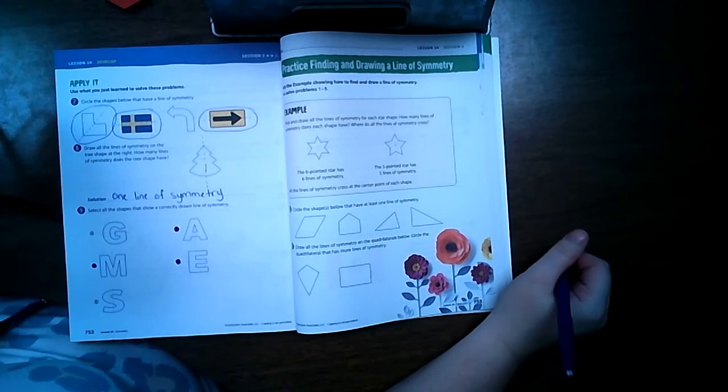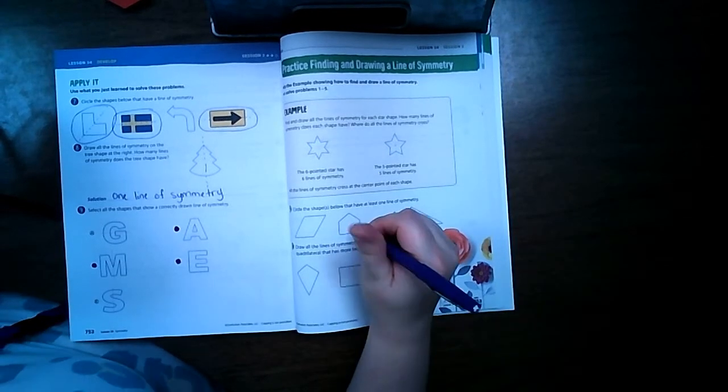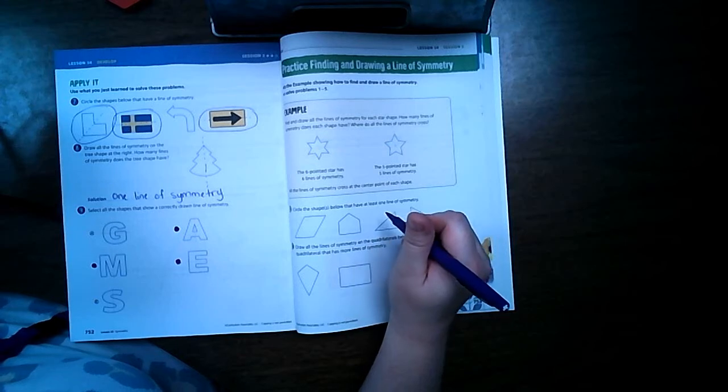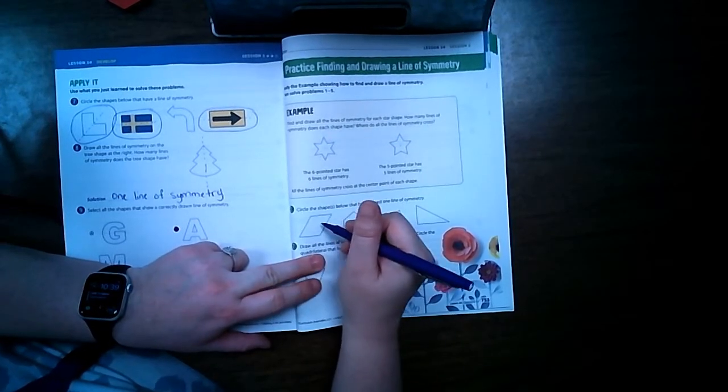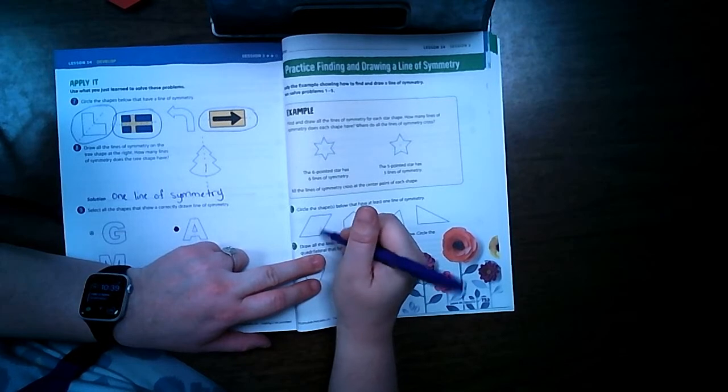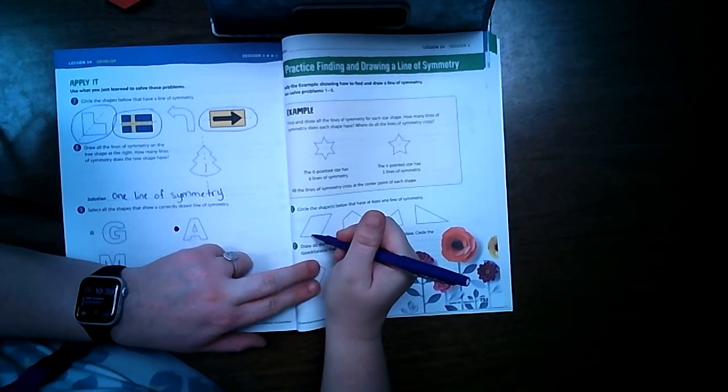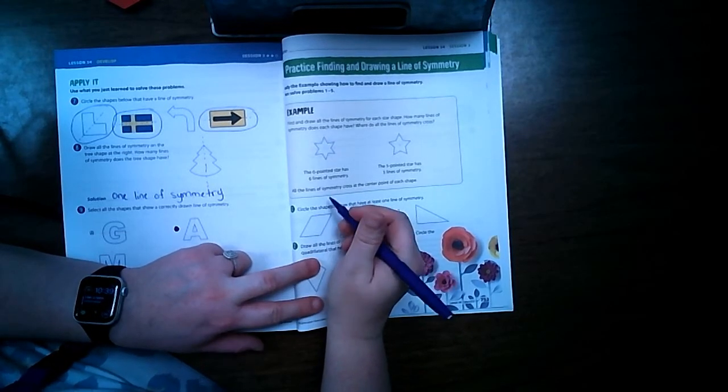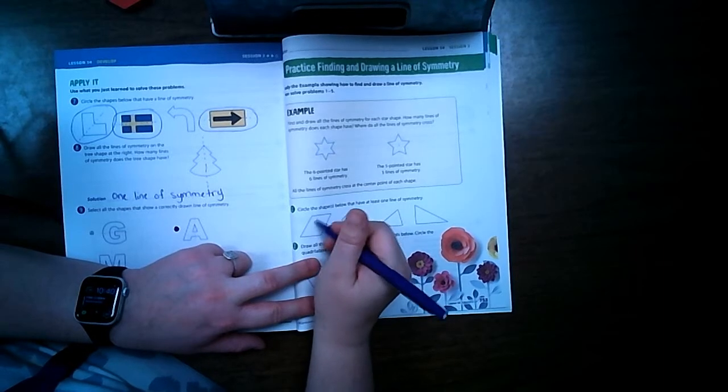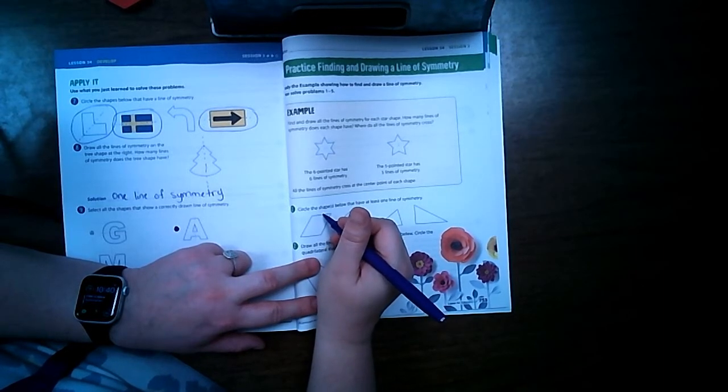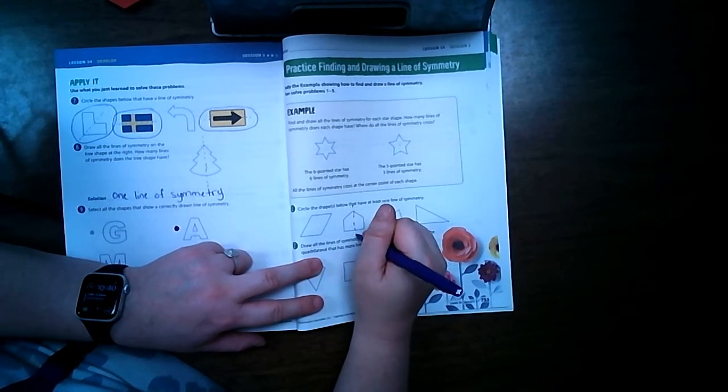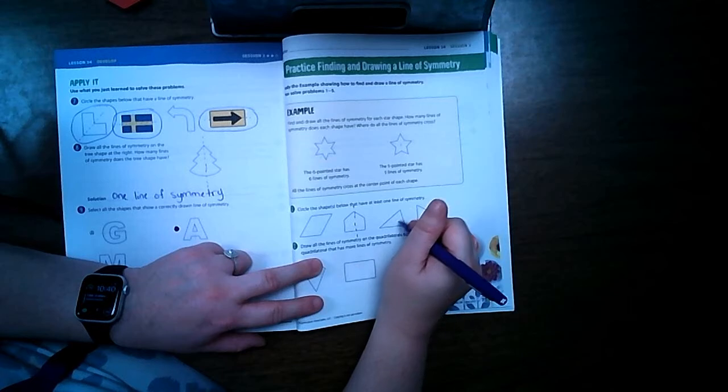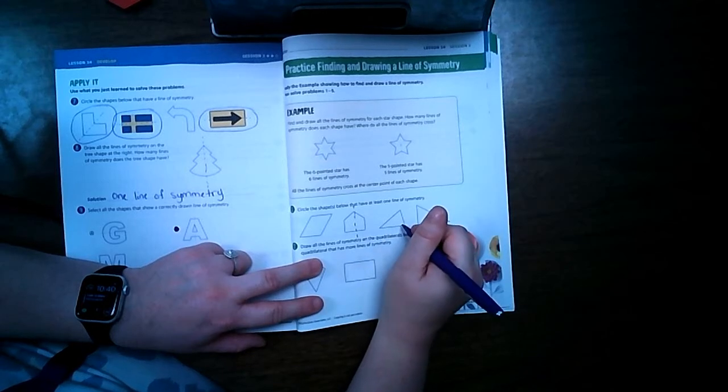Number one: circle the shapes below that have at least one line of symmetry. Well on this one we can't do that way, can't do that way, this we could kind of do... nope, this way wouldn't work either. I don't think, nope that way wouldn't work.